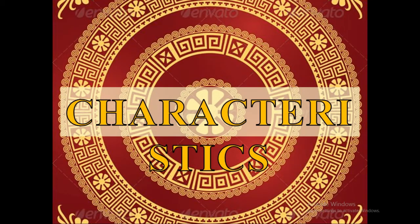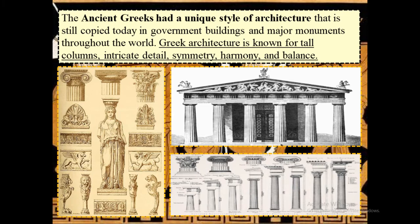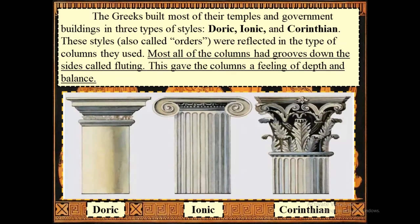The ancient Greeks had a unique style of architecture that is still copied in today's government buildings and major monuments throughout the world. Greek architecture is known for its tall columns, intricate detail, symmetry, harmony, and balance. The Greeks built most of their temples and government buildings in three styles: the Doric, Ionic, and Corinthian. These styles were reflected in the type of columns they used. Most columns had grooves down the side called fluting, which gave the columns added depth and balance.